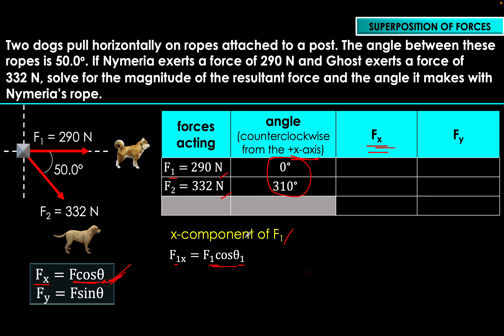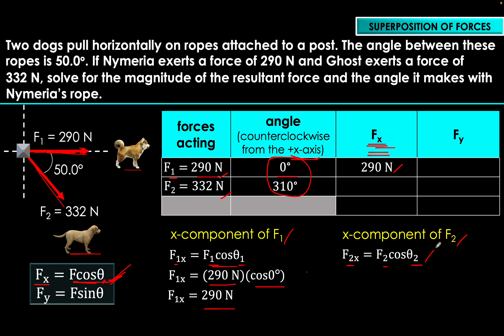Solving for the x-component of force number two (Ghost): Fx₂ = F₂ cosine θ₂ = 332 Newtons × cosine(310°). Using your calculator, you should get 213 Newtons for the x-component of Ghost's force.